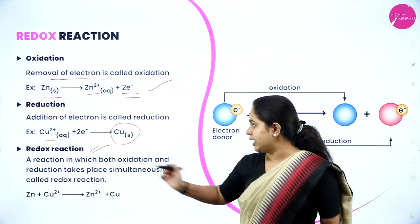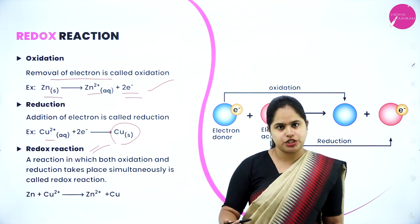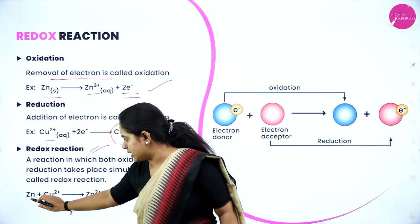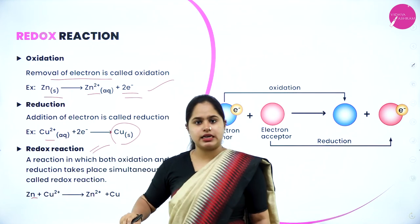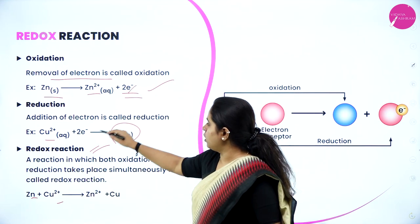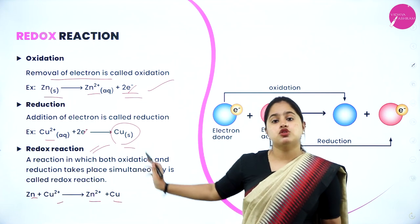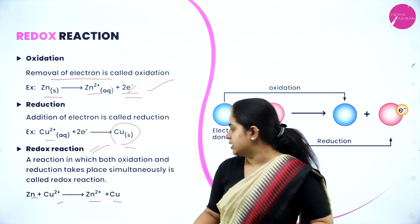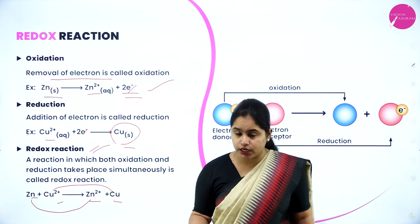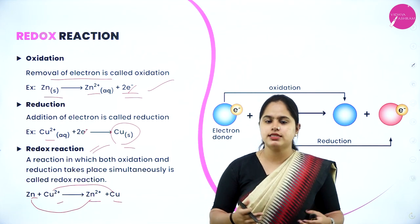A reaction in which both oxidation and reduction take place simultaneously is called a redox reaction. In this example, Zn is converted into Zn²⁺ (oxidation) and Cu²⁺ is converted into Cu (reduction). Both are happening in a single reaction. So the overall redox reaction is: Zn + Cu²⁺ → Zn²⁺ + Cu. Such reactions are called redox reactions.